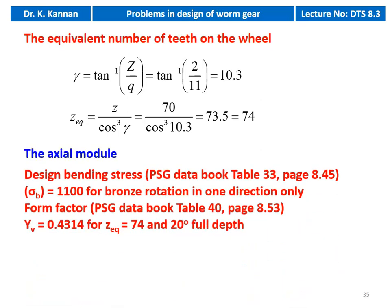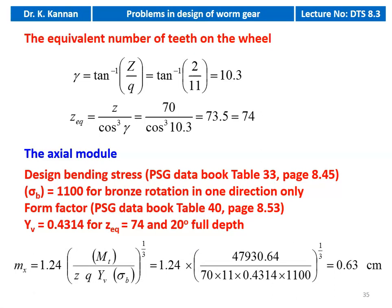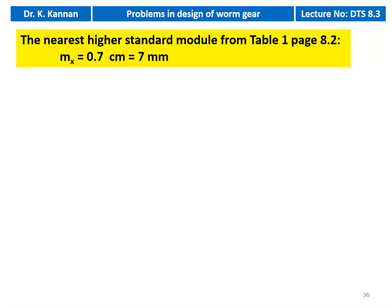We calculate the axial module. The bending stress from table 33, page 8.45: sigma_b = 1100 for bronze, rotation in one direction only. Form factor = 0.4314 for Z_eq = 74 and 20-degree full depth teeth. MX = [1.24 × MT_design / (Z × Q × Y_v × sigma_b)]^(1/3) = [1.24 × 47,930.64 / (70 × 11 × 0.4314 × 1100)]^(1/3) = 0.63 cm. We take the next higher standard module: MX = 0.7 cm (7 mm).